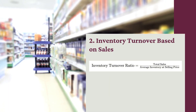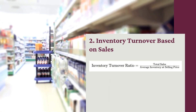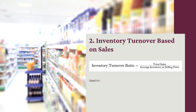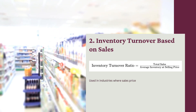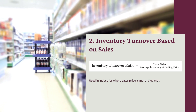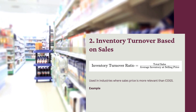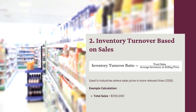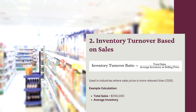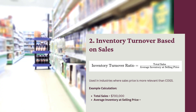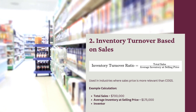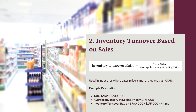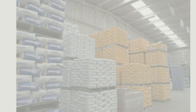Second, inventory turnover based on sales: Inventory Turnover Ratio = Total Sales / Average Inventory at Selling Price. Used in industries where sales price is more relevant than COGS. Example: Total Sales = $700,000; Average Inventory at Selling Price = $175,000; Inventory Turnover Ratio = $700,000 / $175,000 = 4 times.